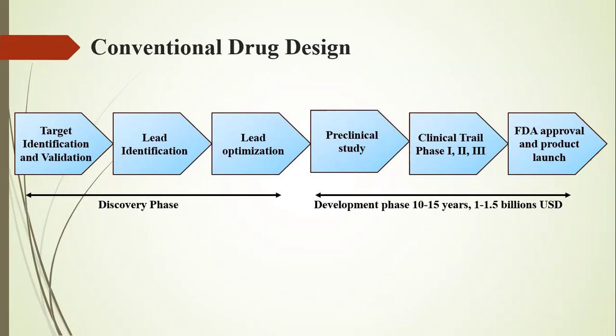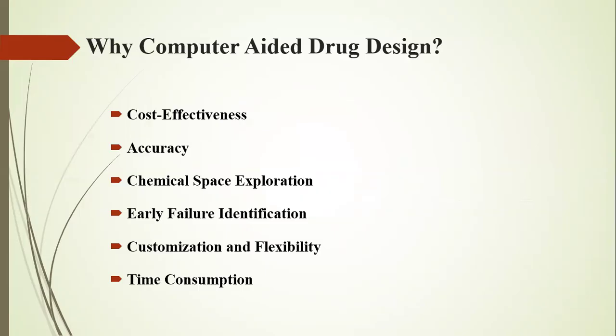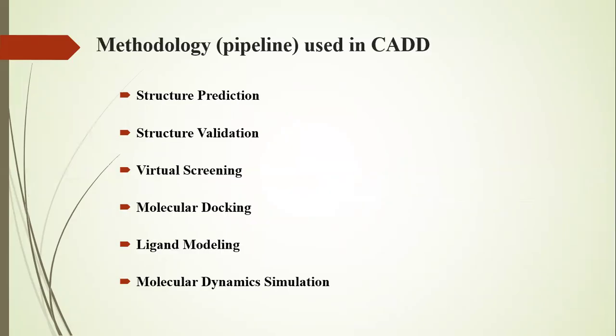Then we go to clinical phase one, phase two, and phase three, followed by the long process of FDA drug approval. Because of these lengthy phases, researchers jump into computer drug design, which is cost-effective and helps determine early on whether a compound will work in further experiments. Most importantly, it is far less time-consuming and cost-consuming compared to the conventional drug design method.